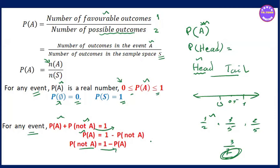So if you want to use the formula, the formula is: P(A) equals number of outcomes in event A divided by number of outcomes in the sample space. So P(A) is equal to N(A) divided by N(S). I want to show you how to work with the sample space and the number of outcomes. In our video, you can see the number of outcomes in the sample space.